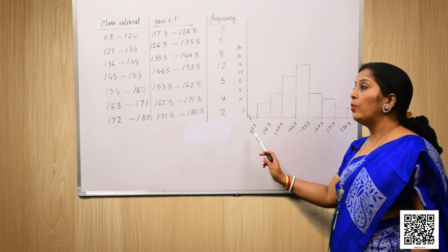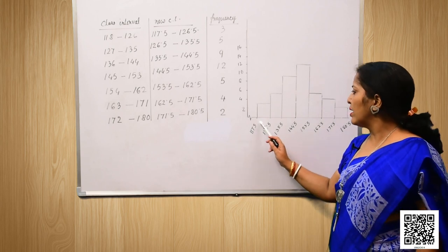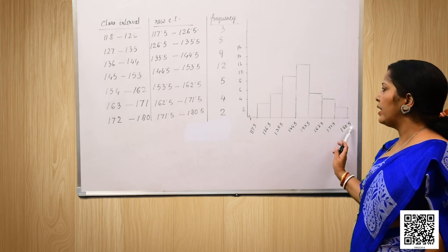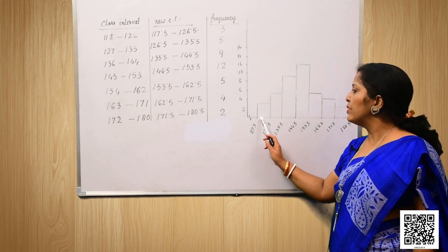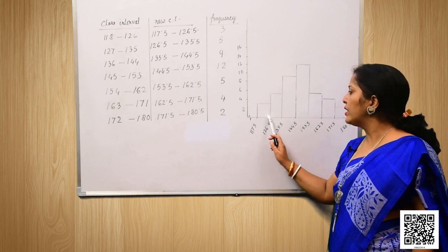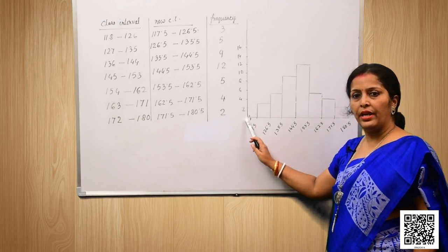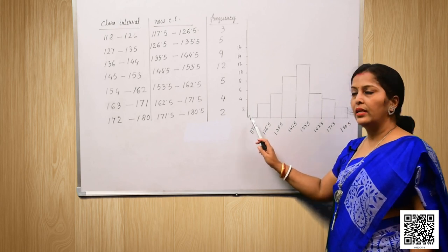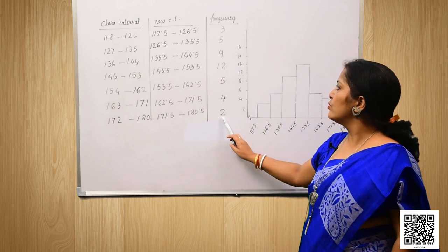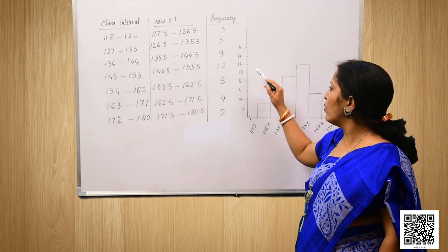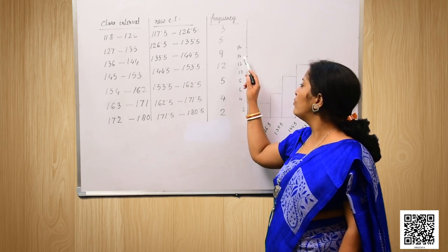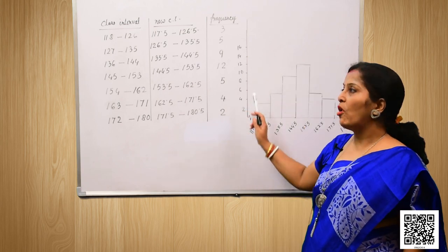Along the horizontal line we mark the new class intervals: 117.5, 126.5, and so on up to 180.5. Since there is a gap between 0 and 117.5 where the width is not equal, we make a zigzag on this line. Along the vertical line we draw the frequencies. The lowest frequency is 2 and the highest is 12, so we mark them as 2, 4, 6, 8, 10, 12, 14, 16, all of equal width.